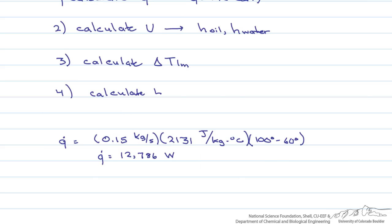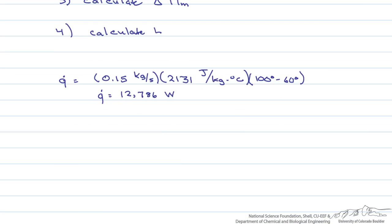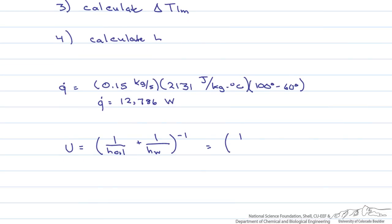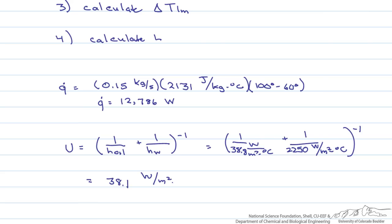Now we calculate U. The overall heat transfer coefficient U equals 1 over the convective heat transfer coefficient of the oil plus 1 over the convective heat transfer coefficient of the water, all raised to the negative 1. Substituting in the given values, U equals 38.1 W/(m²·°C).